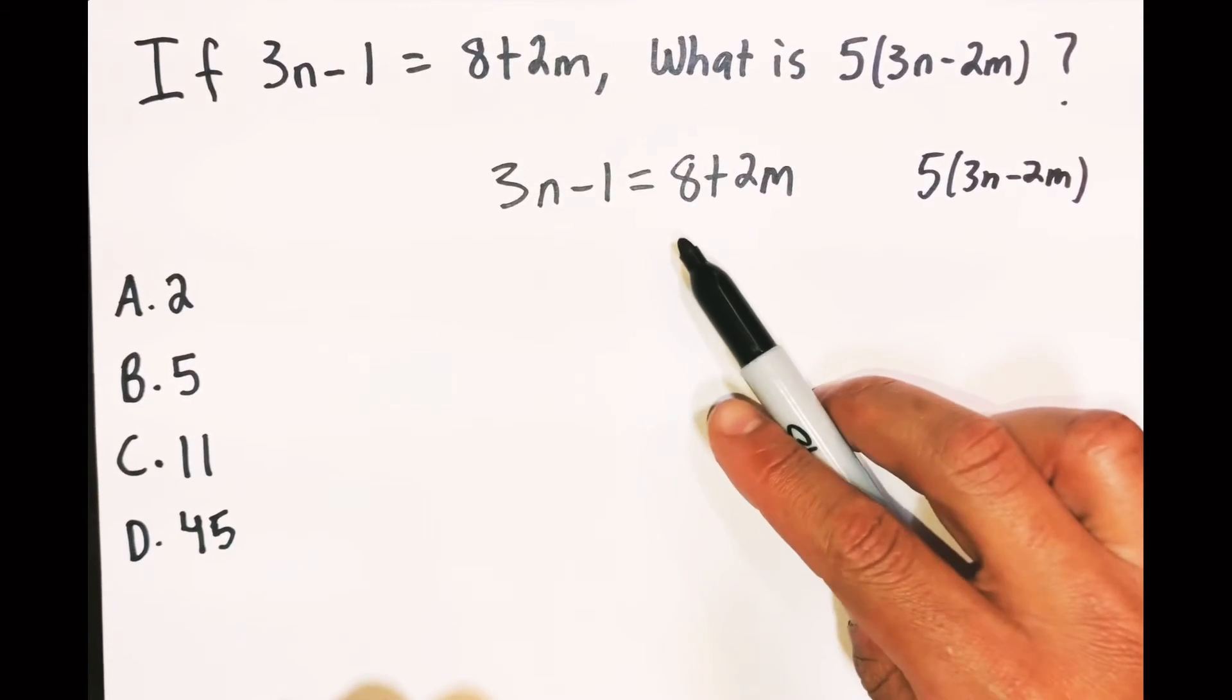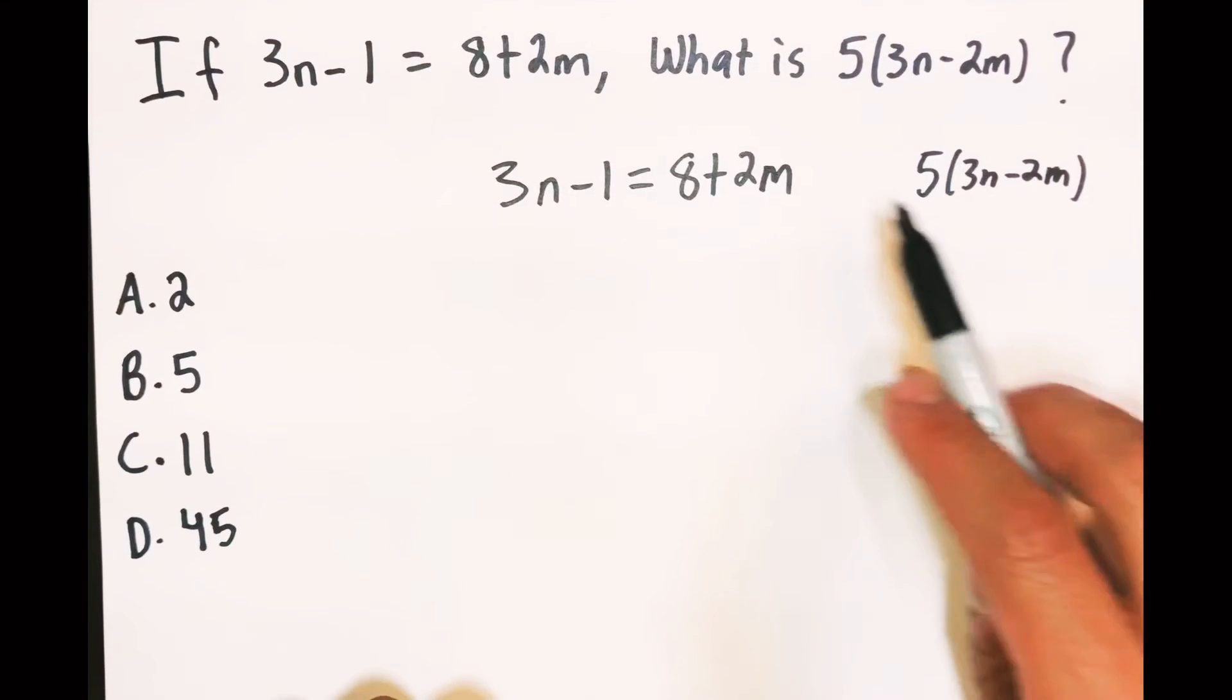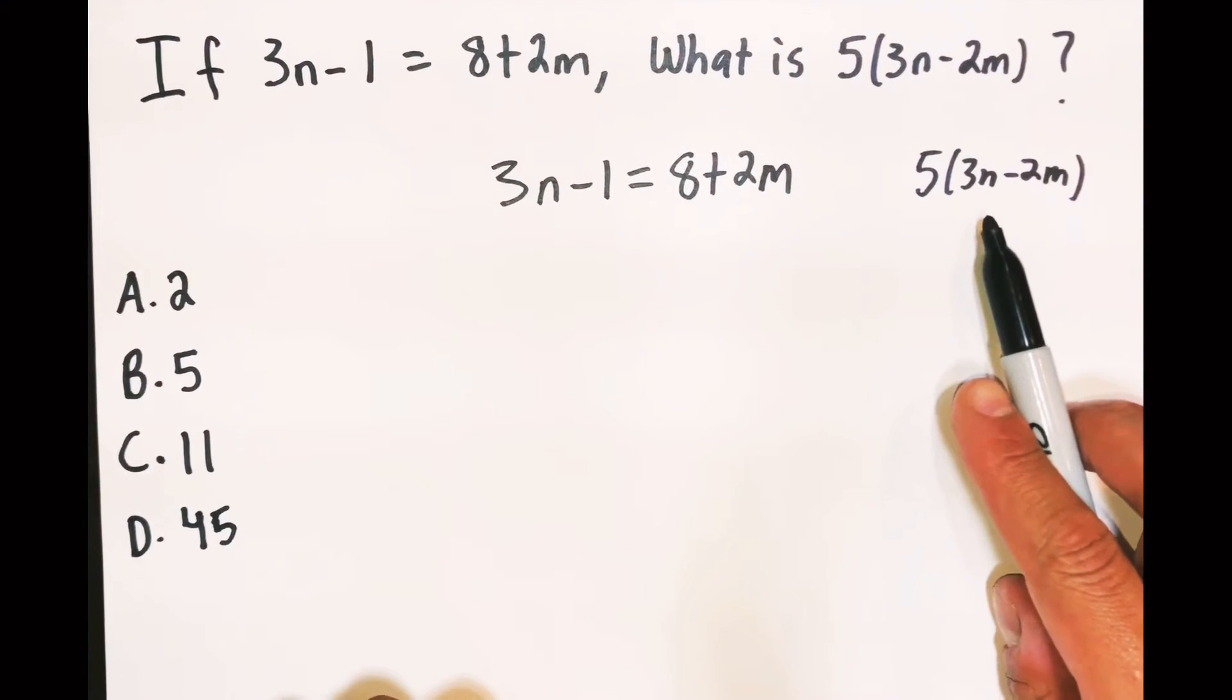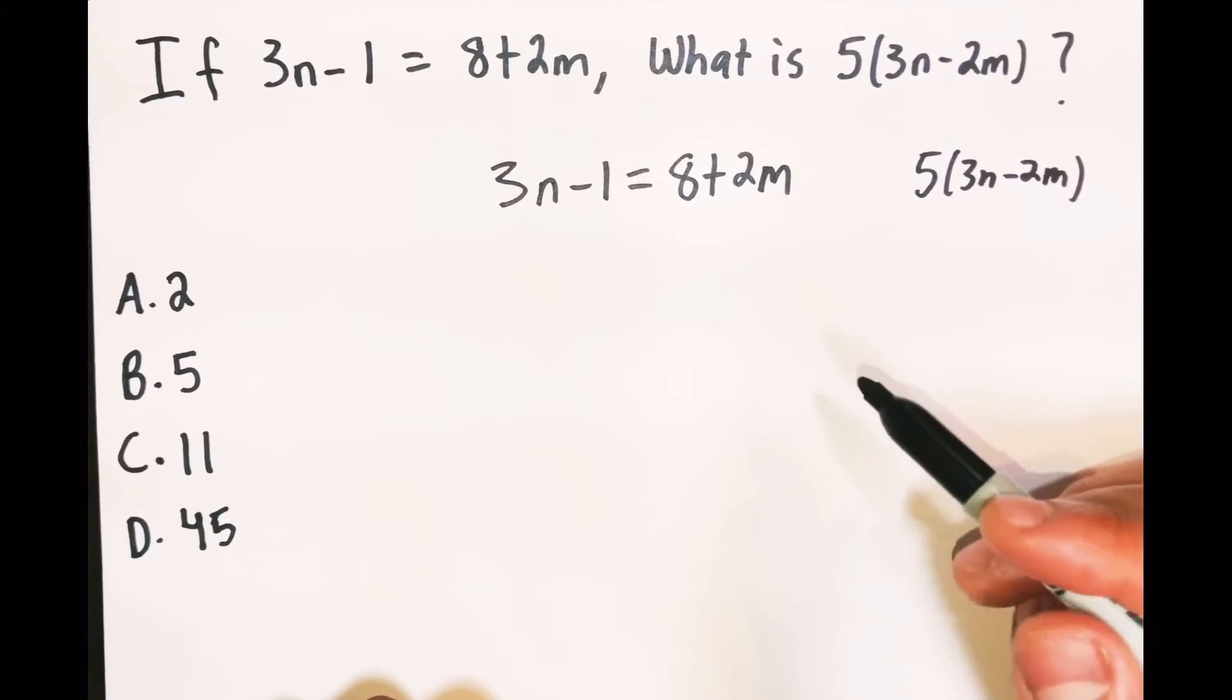But I'm looking at this right here, and I see a 2m and I see a 2m here, and I see a 3n and I see a 3n there too. I can finesse my way in there somehow.